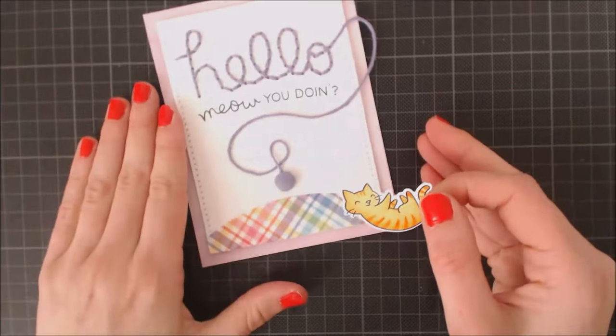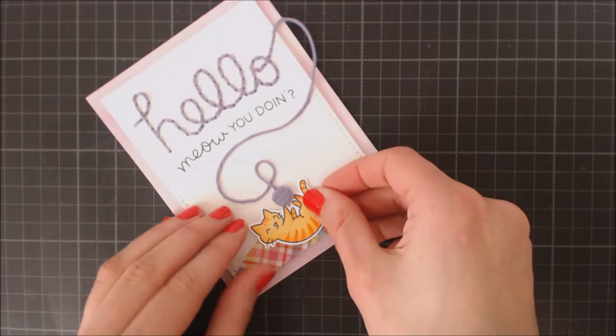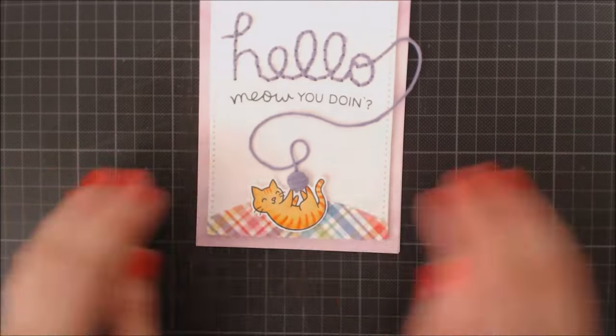Now I'm placing the kitty on my scene like he is playing with the ball of yarn. And it's done!